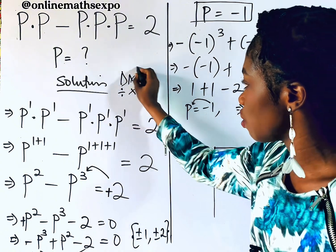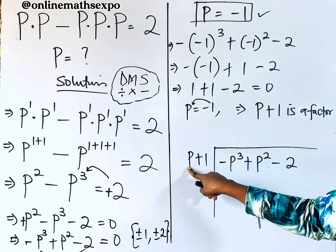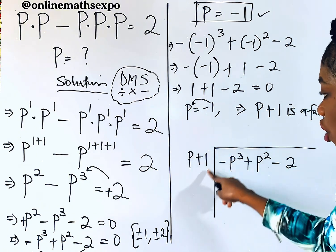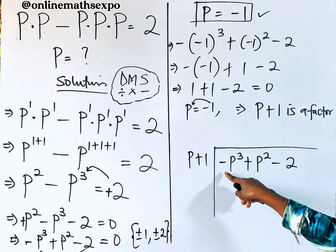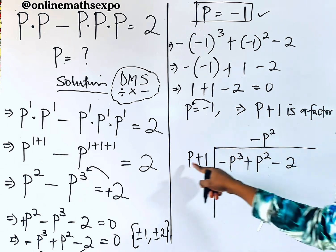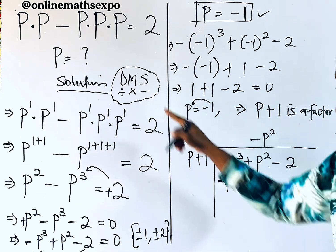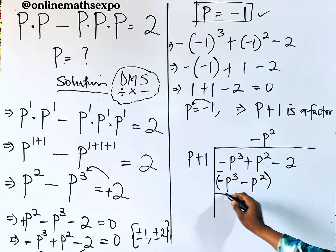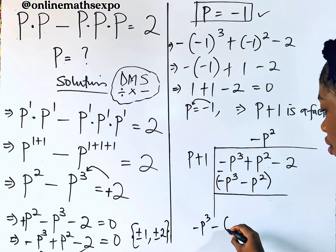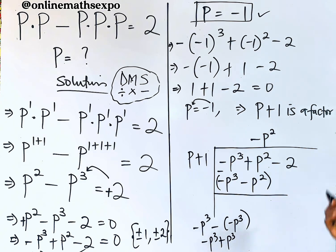First step: divide the first term of the divisor, p, into the first term of the dividend, −p³. That gives −p². Then multiply −p² by the whole divisor (p + 1): this gives −p³ and −p². Next, subtract: −p³ take away −p³ gives zero, since negative times negative is positive.